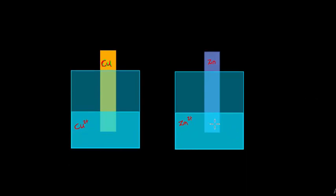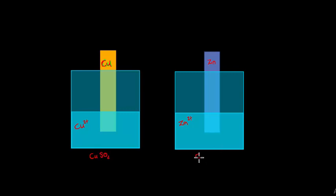Where did these cations come from? An electrolyte — a salt that ionizes when put into water — was added to the solution. The salt used here might be copper sulfate, and the salt used on the zinc side might be zinc sulfate. The two electrodes are connected with an external wire of conductive material.